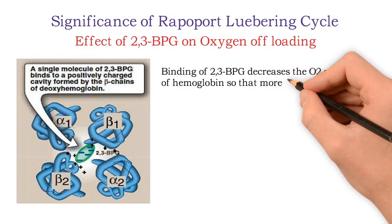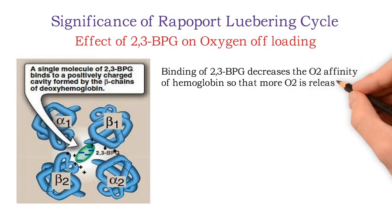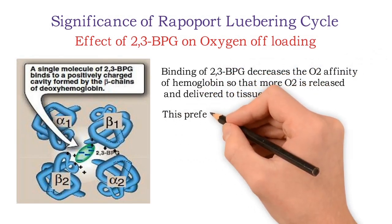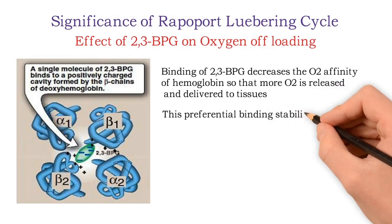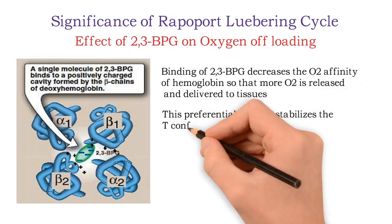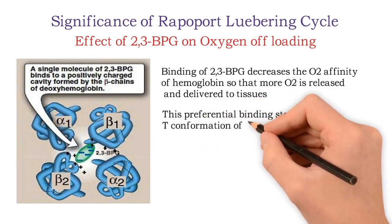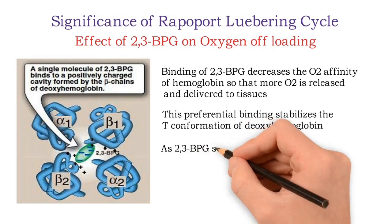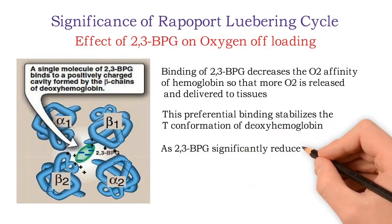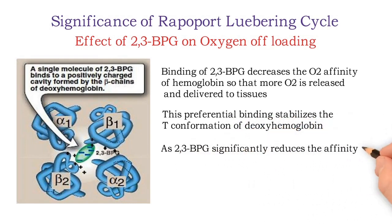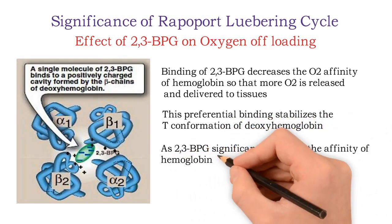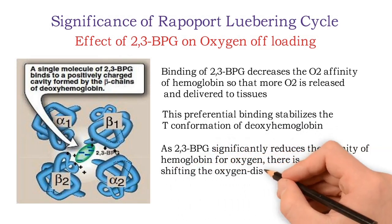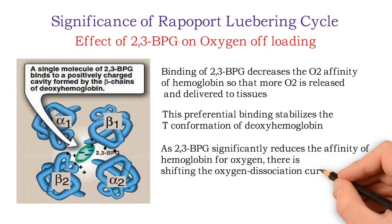Binding of 2,3-BPG decreases the oxygen affinity of hemoglobin so that more O2 is released and delivered to the tissues. This preferential binding stabilizes the T-conformation of deoxyhemoglobin, as 2,3-BPG significantly reduces the affinity of hemoglobin for oxygen. This results in a shift of the oxygen dissociation curve to the right.